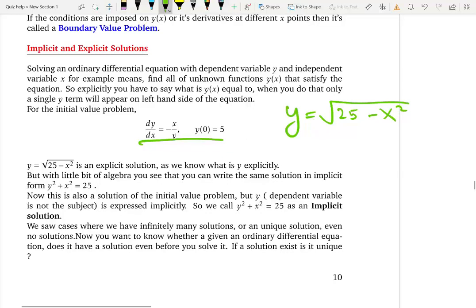But here's an implicit solution. I can take the square root to the left hand side and write y square is 25 minus x square. And let's write this x square to the left hand side, like y square plus x square is equal to 25. Now what did I do here?